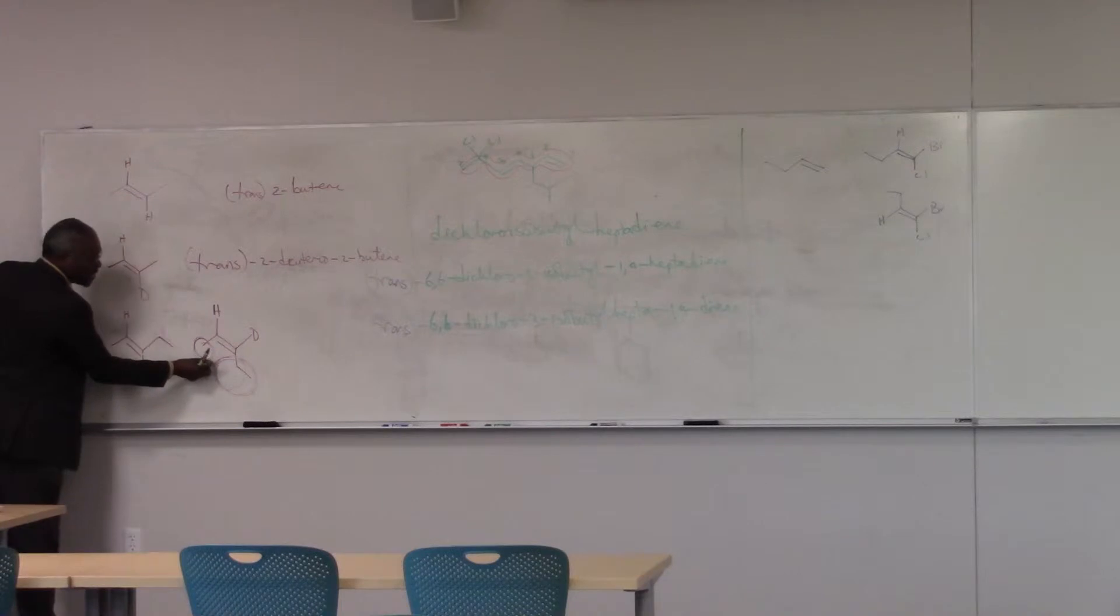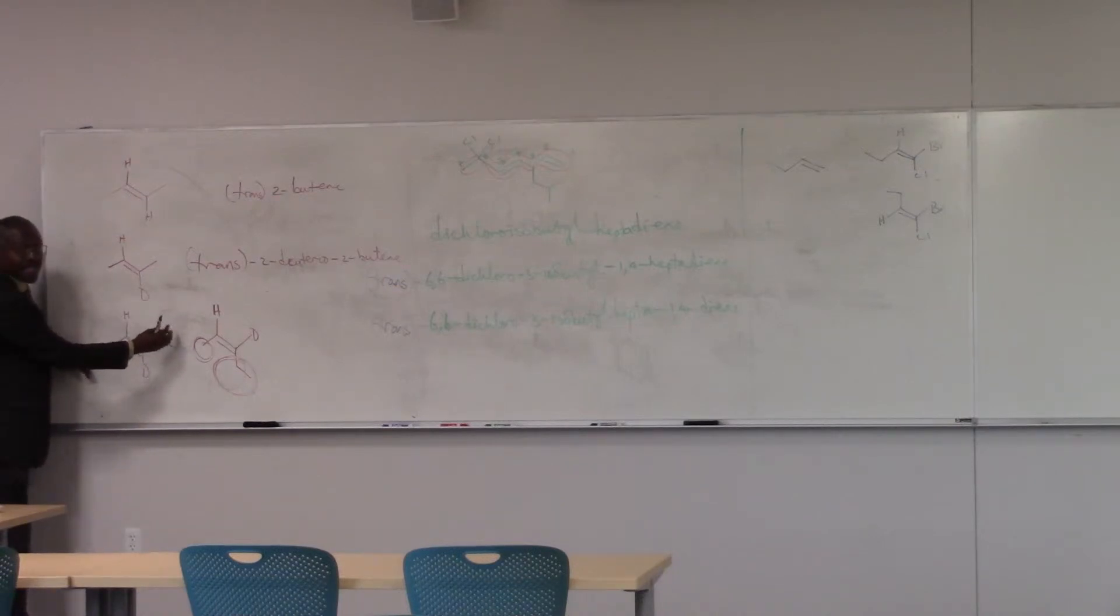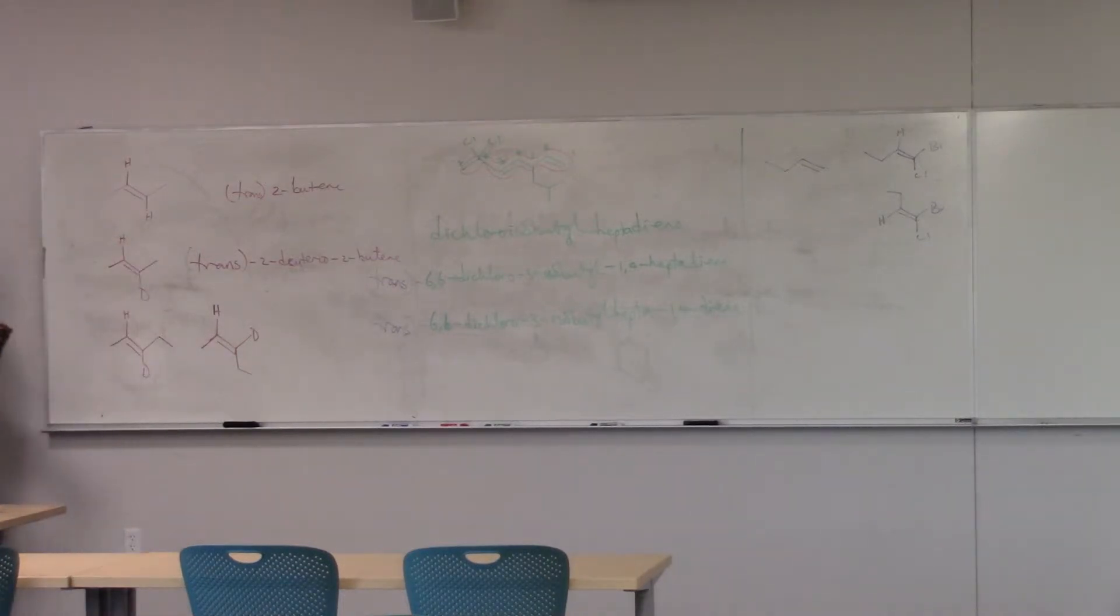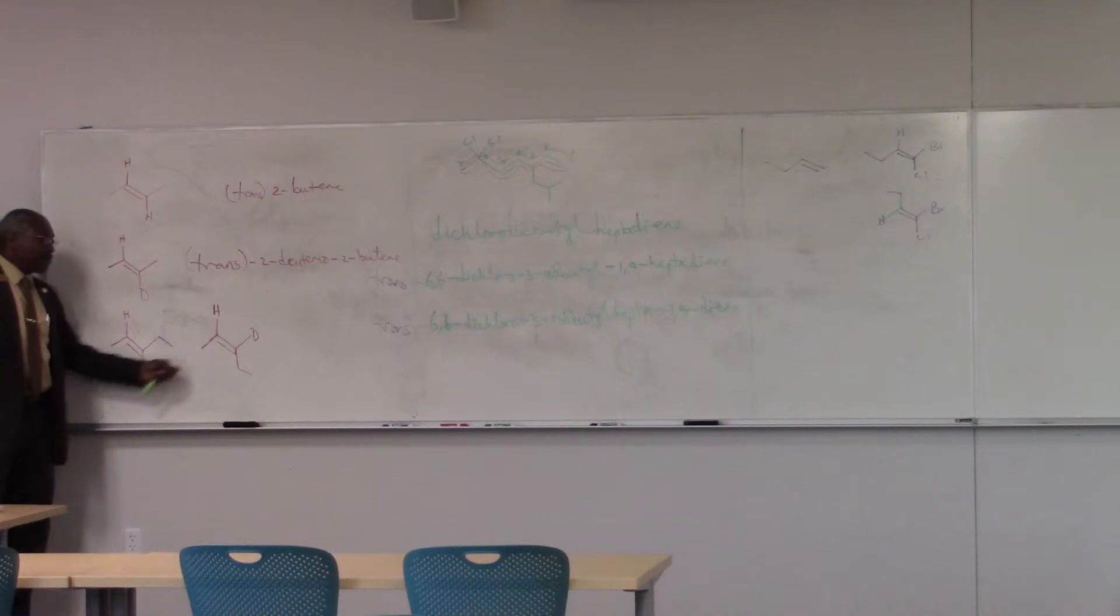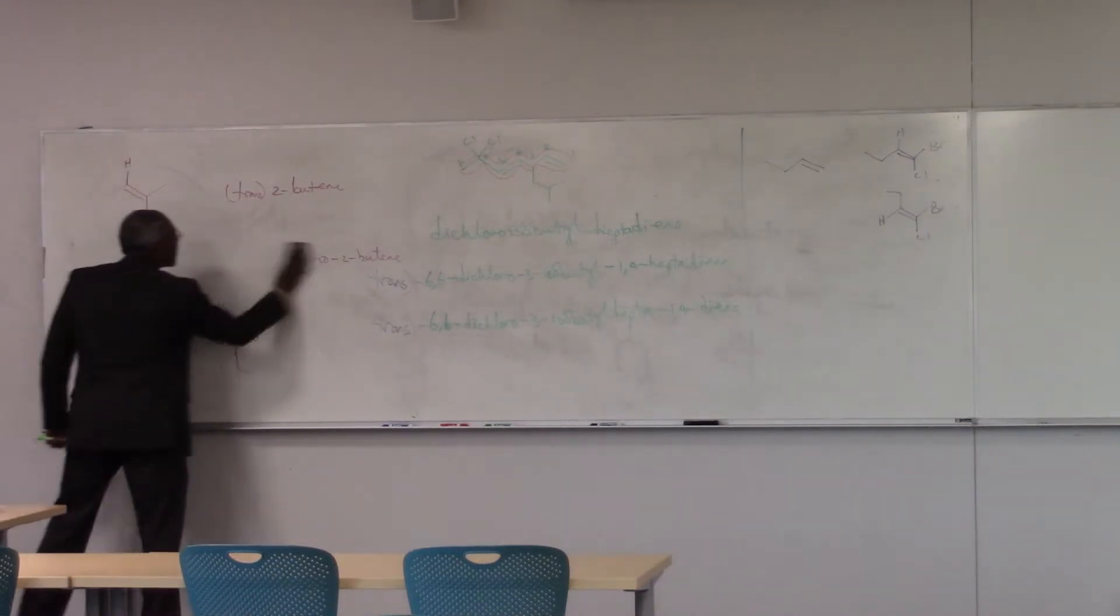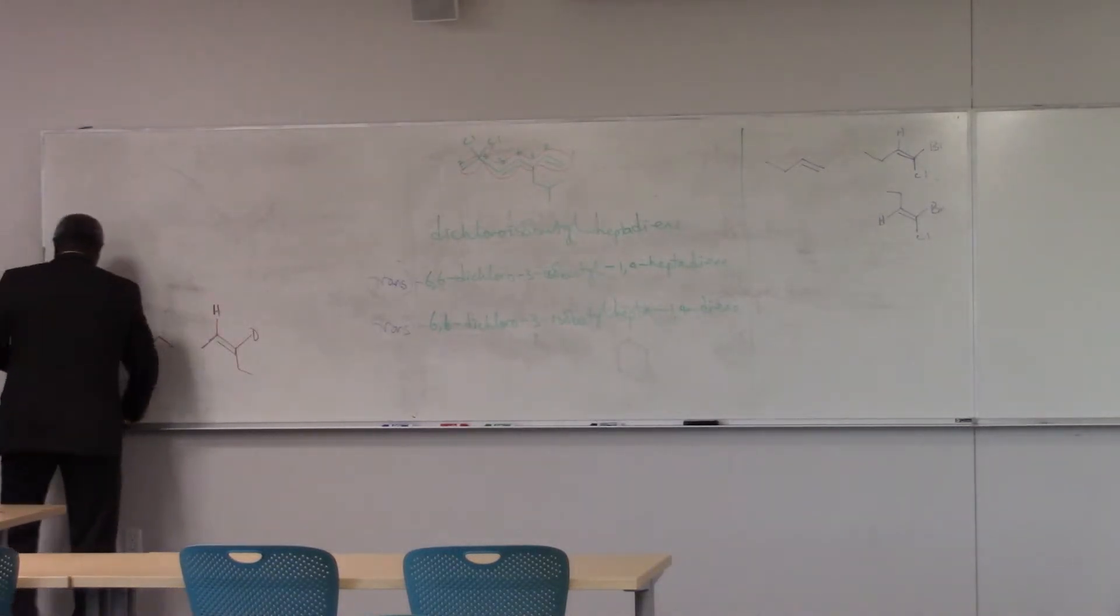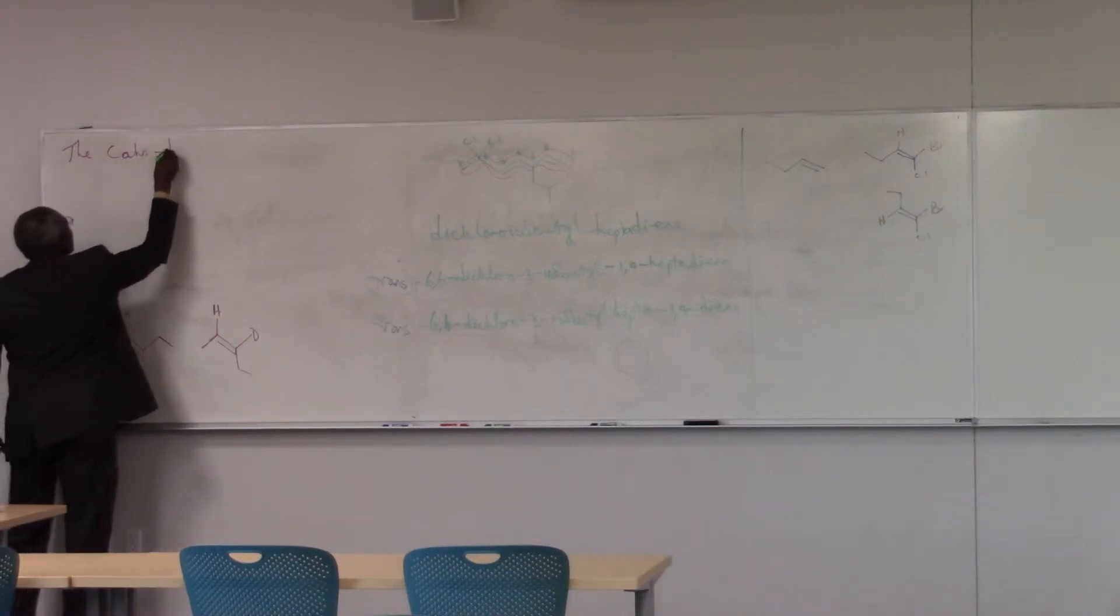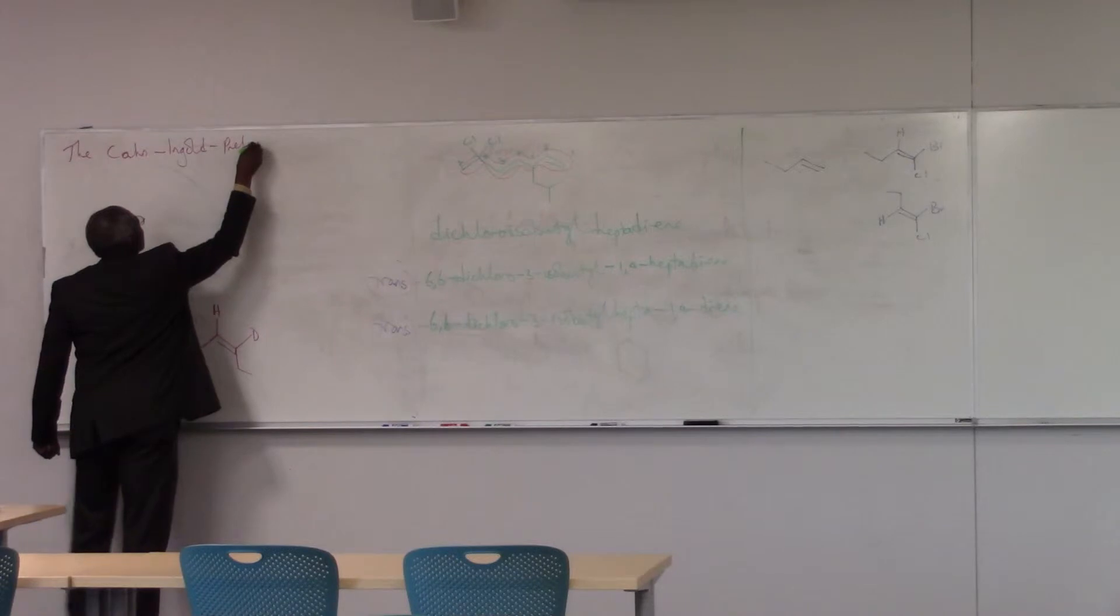Because it turns out the methyl group is a certain size, the ethyl group is a certain size. These two groups are bumping into each other, rubbing against each other, destabilizing. Whereas in this case, they're further apart and there's less hindrance. So these two compounds are very different from each other. And so I need to indicate which is which. But here's a case where the labels cis and trans don't apply. So what do we do? How do we distinguish this compound from that compound? And the answer is we're going to use what's called the Cahn-Ingold-Prelog system.